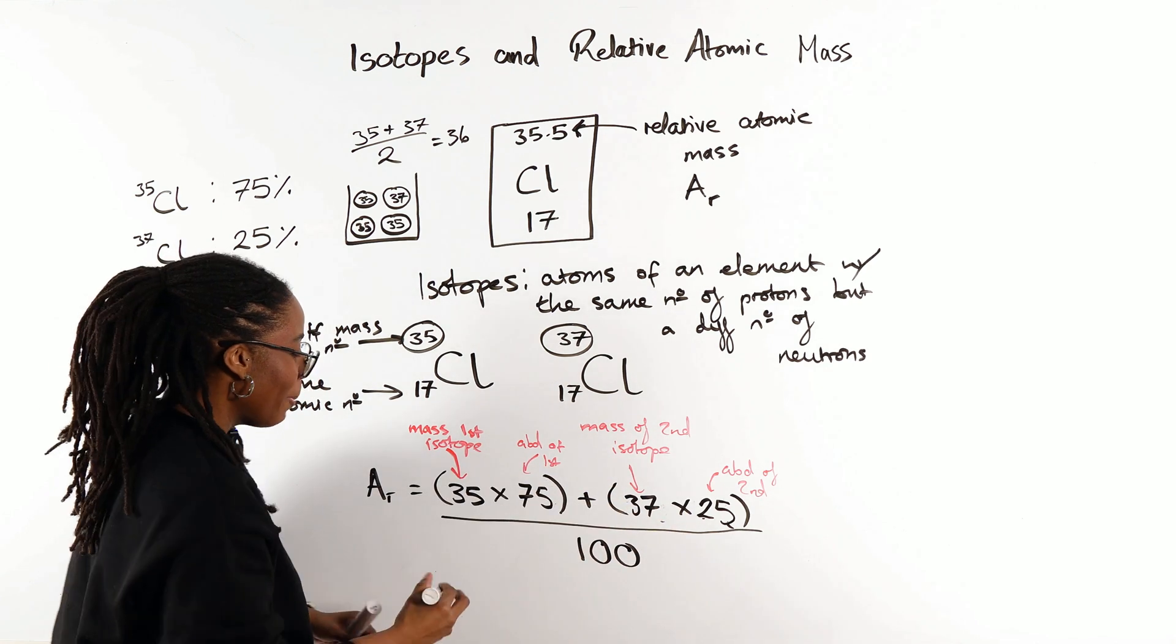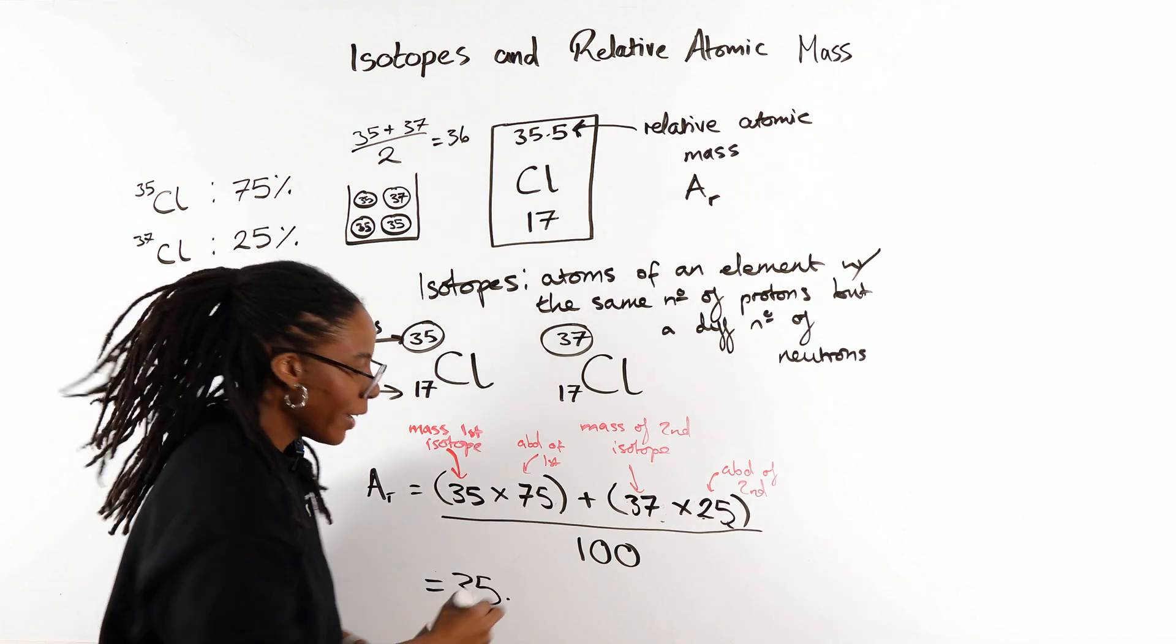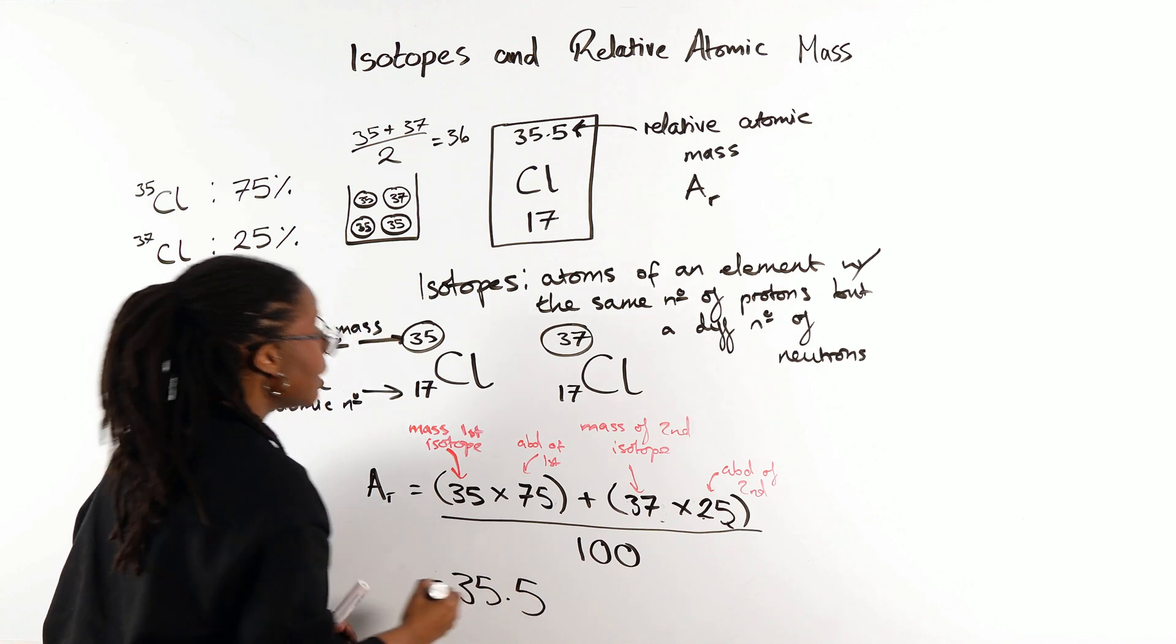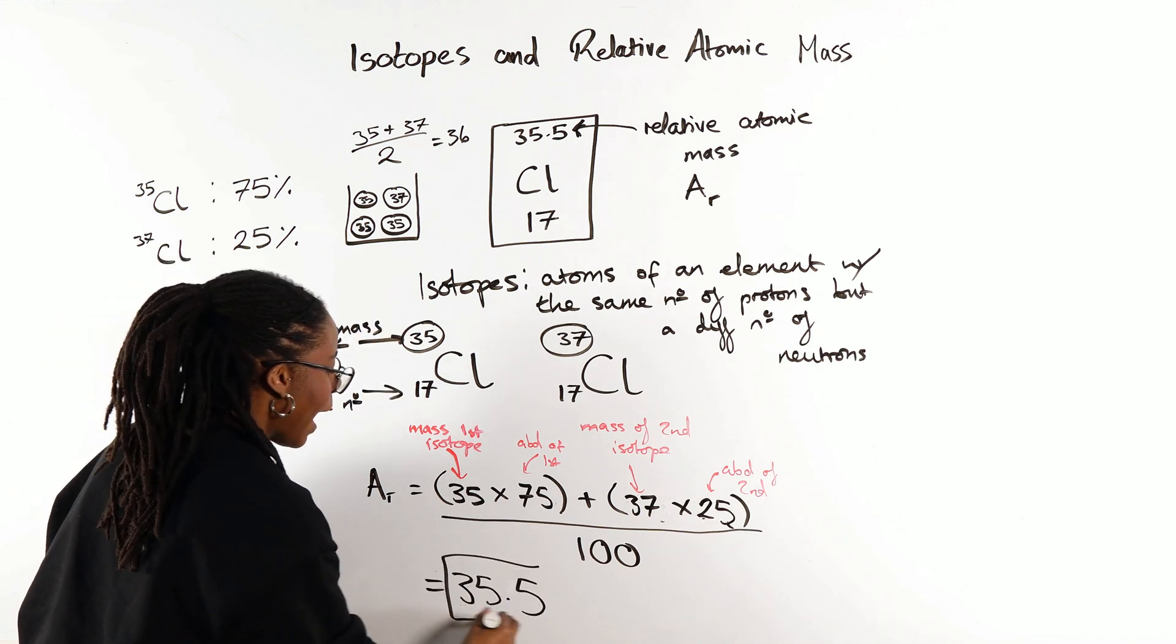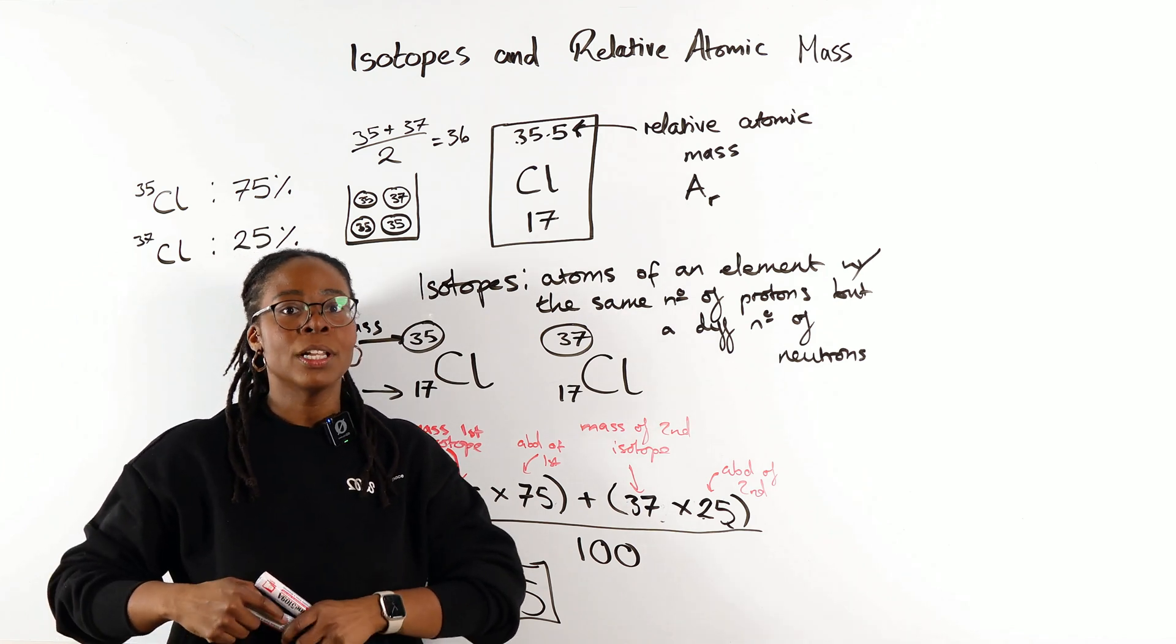And its abundance is 75%. The mass of our second isotope is 37 multiplied by its abundance of 25%. Plug that all in, divide by 100, and you end up with 35.0.45, but that rounds up to 35.5 as your relative atomic mass, which is what we then find in our periodic table.